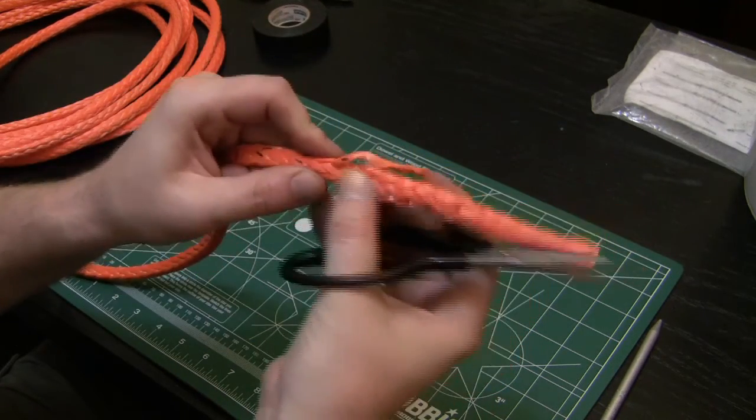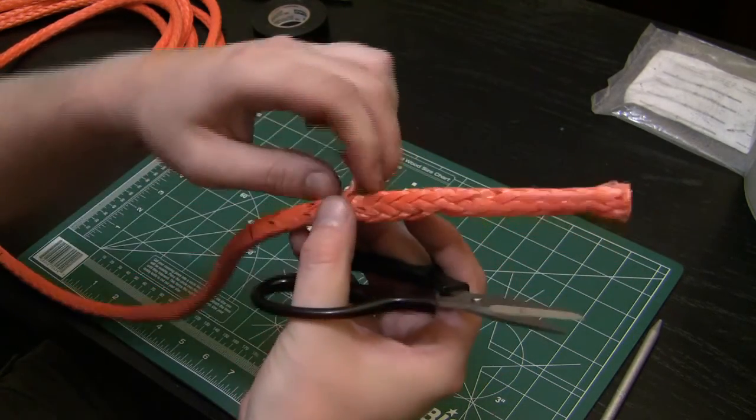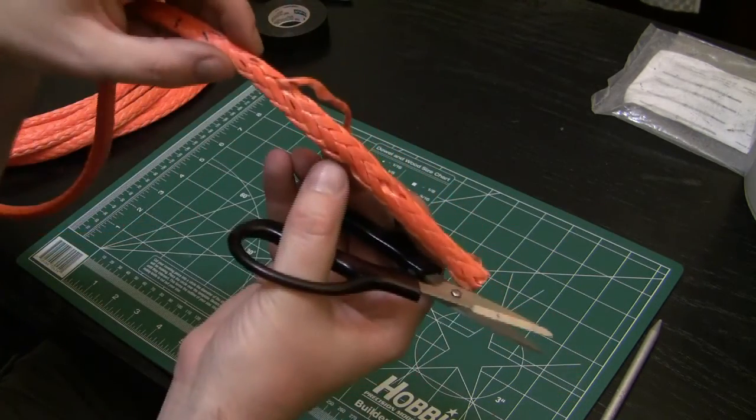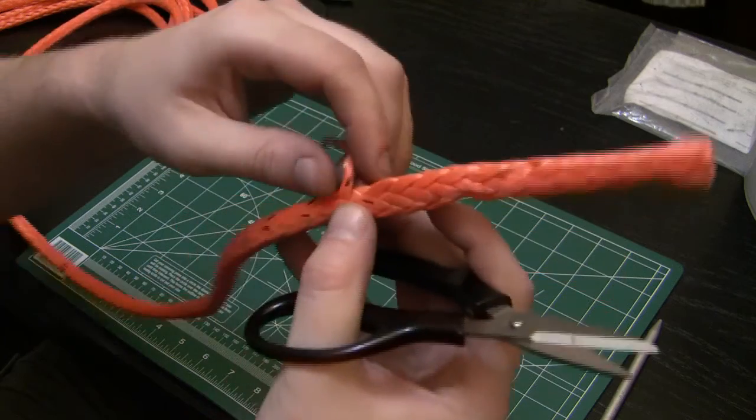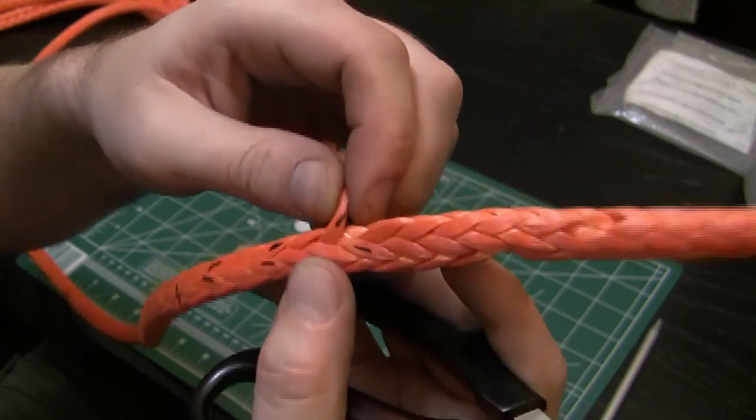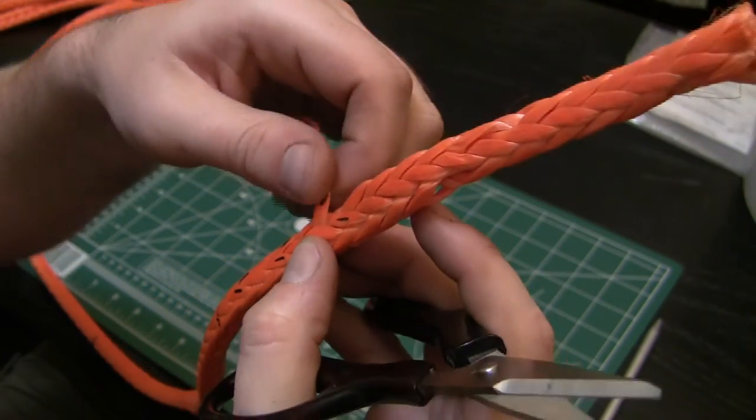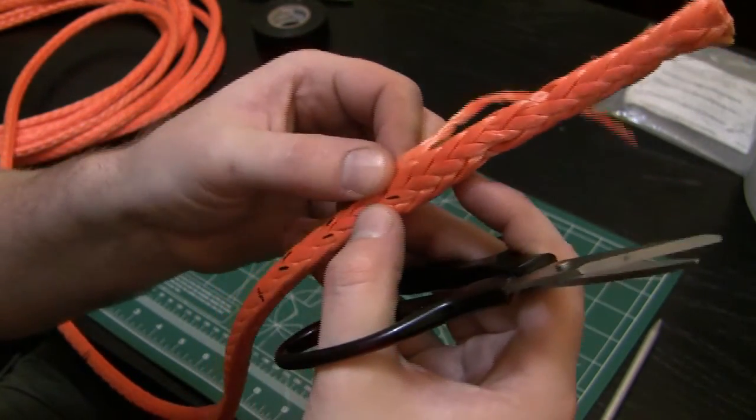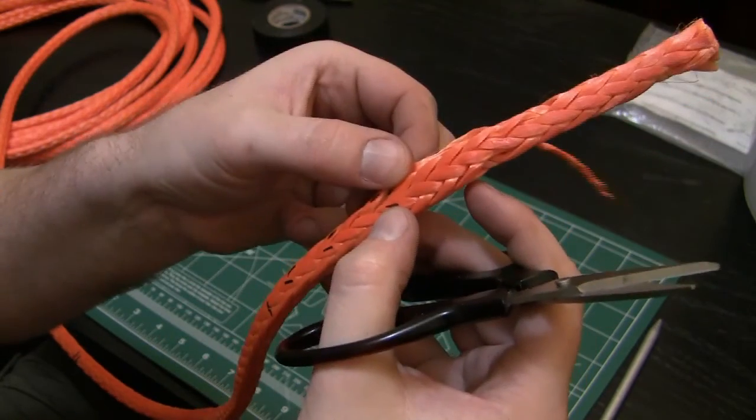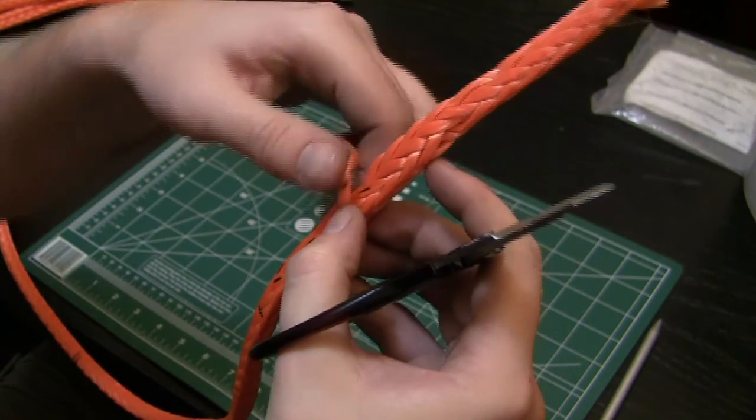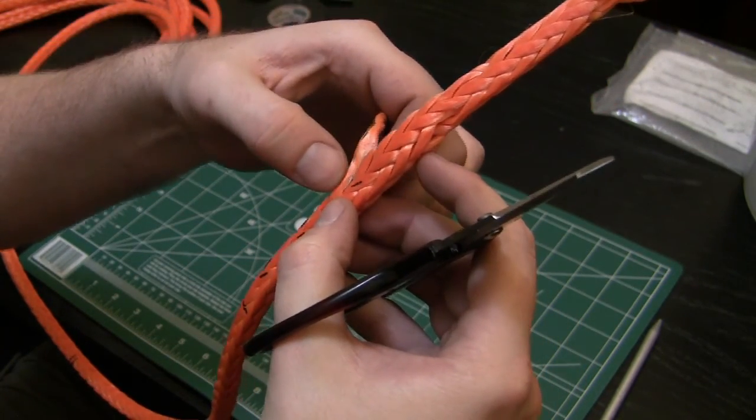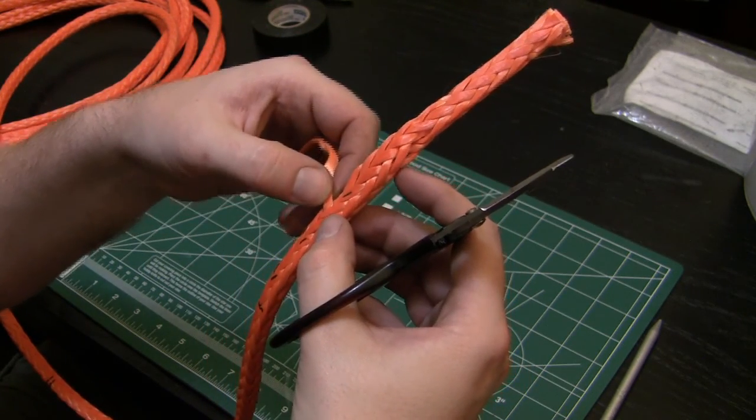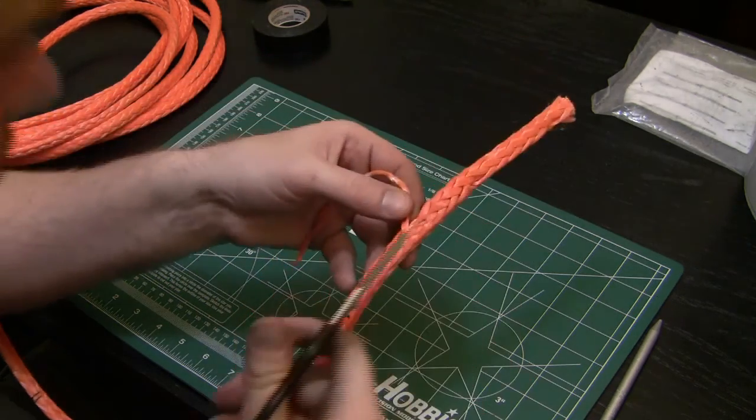When you cut it you don't want to have too much of a frayed end sticking up because those will catch like a barb when you bury it. There's an impression where the V, where this strand overlaps this strand, and you want to cut right along that line. That's where you want to cut all of your strands.